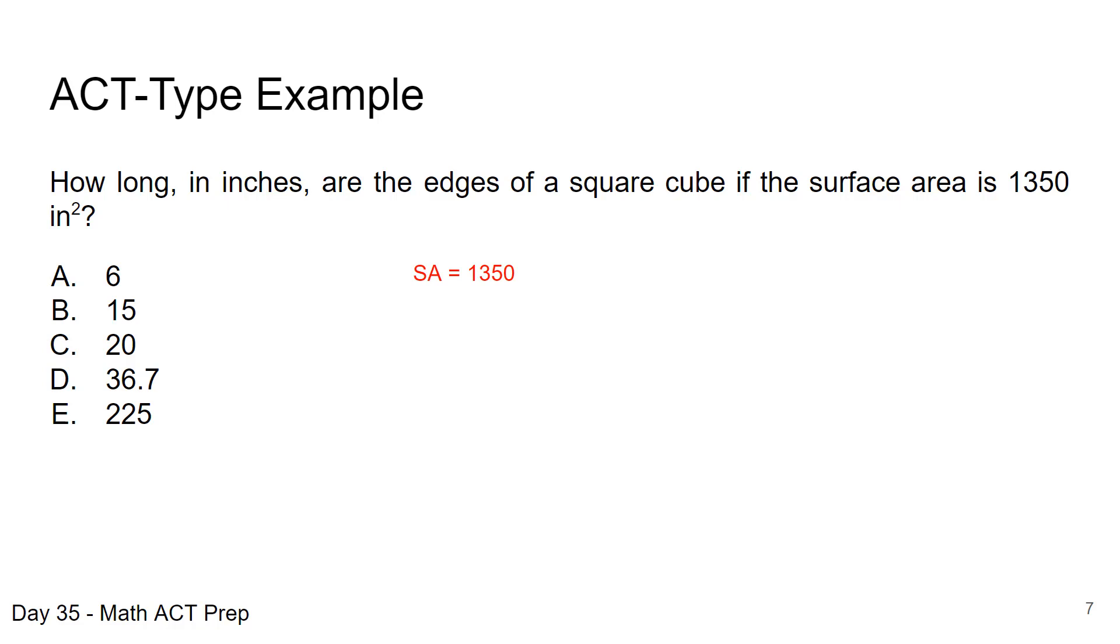So we're kind of working in a different direction from what we generally think of with a formula solved for, we already know the surface area. We've talked about previously that a cube has 6 faces that are squares, and we know that the area of one face is side squared, and with 6 of those, that's going to make the surface area equal to 6s².